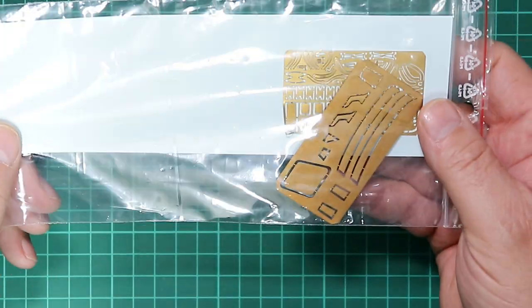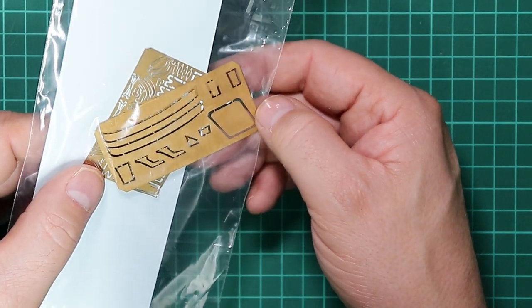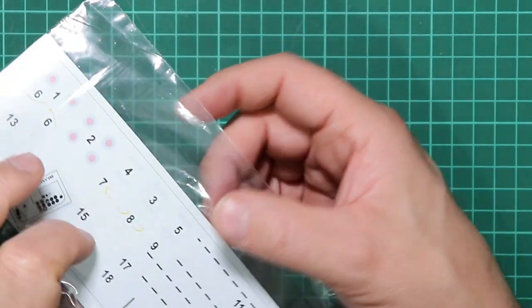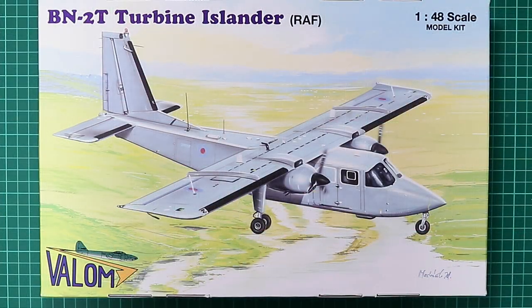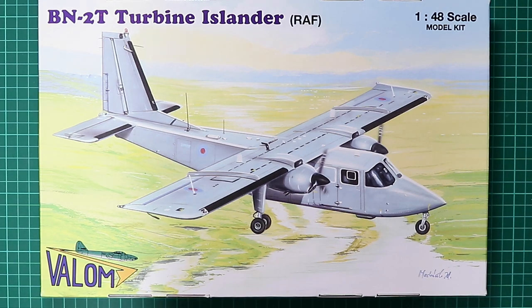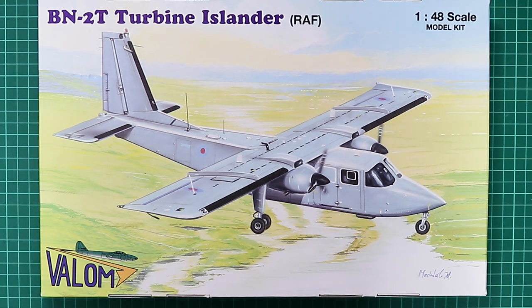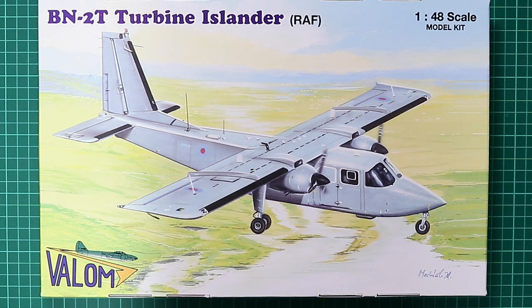A couple of etch frets, I'm not going to get those out, but we've got some wing fences and other details there, and all those plates that go on the under surface. So there we have Valom's 1:48 scale BN-2T Turbine Islander in RAF markings. I'm really pleased with the contents of the kit, not having bought a Valom kit before or seen a Valom kit before. I certainly think there's going to be a little bit more work involved than perhaps a mainstream scale model, but then none of the mainstream manufacturers would probably have a dream of doing an Islander in 48th. So it'll be interesting to see how the build progresses. Look out for a future video build here on Rick's Scale Model Fix. Until next time, please everybody look after yourselves, stay well, and take care.